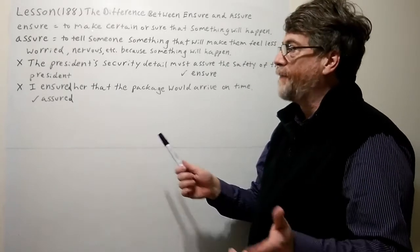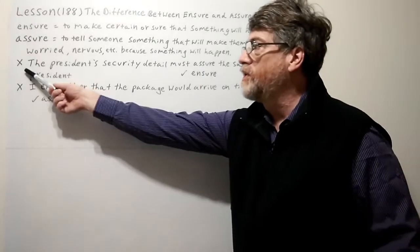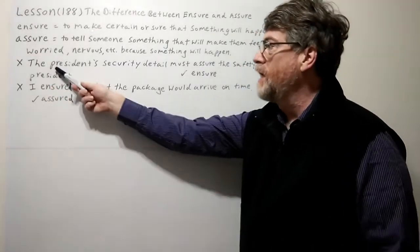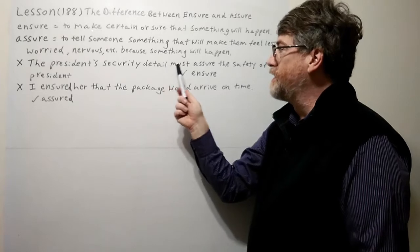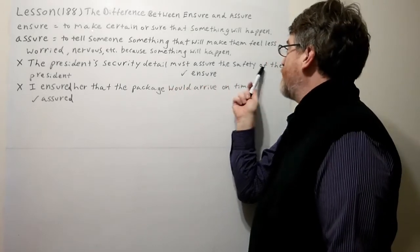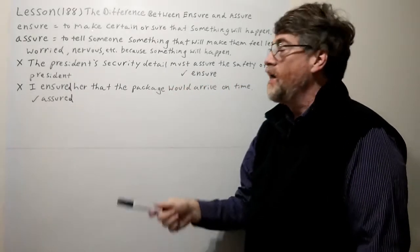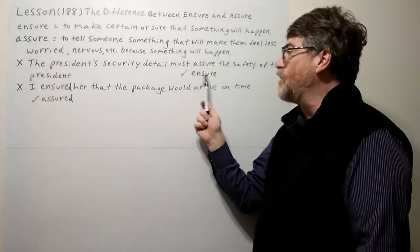Let's look at the first example. Here with the X, of course this would be wrong if you say the president's security detail must assure the safety of the president. Now of course the answer should be insure.